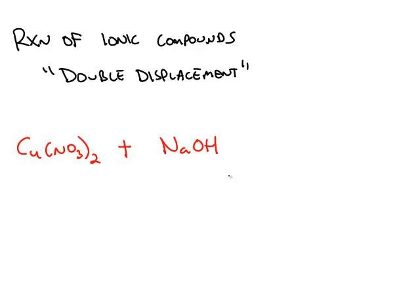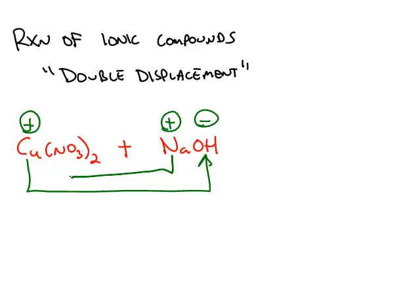Here are two ionic compounds, and in a double displacement reaction, the cation from the first ionic compound is going to be attracted to the anion from the second. So the copper cation is going to be attracted to the hydroxide anion, and then the sodium cation is going to pair up with the nitrate anion.